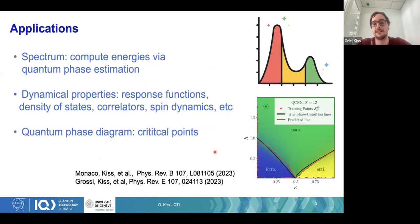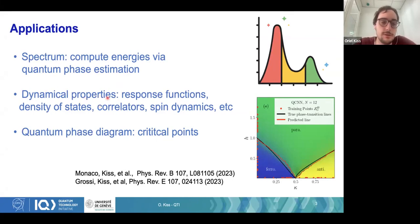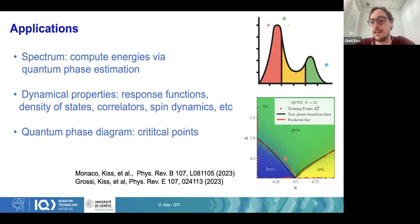Quantum simulation has a lot of applications, particularly in physics but also in other fields. The first application is computation of the spectrum — computing the eigenvalues of some Hamiltonian — using quantum phase estimation, which uses time evolution as a subroutine. Other applications include computation of dynamical properties such as response functions, correlators, spin dynamics, density of states, and phase diagrams. On the right you can see the phase diagram of an Ising chain with next-nearest-neighbor interactions, drawn using quantum machine learning techniques.